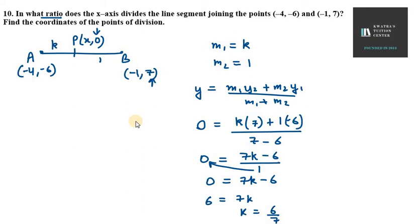So now our ratio will be K ratio 1. K is 6 over 7, ratio 1. So that's 6 over 7 ratio 1, which is 6 to 7. So M1 is 6, M2 is 7.